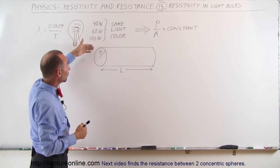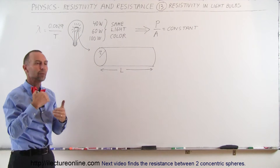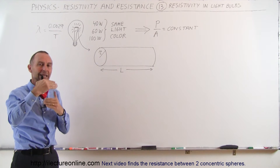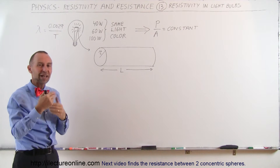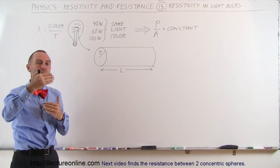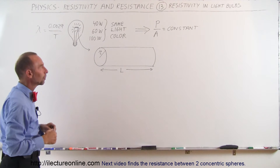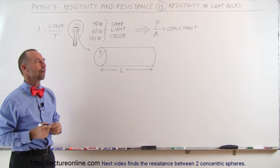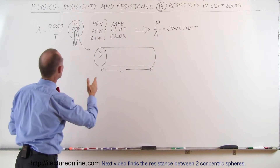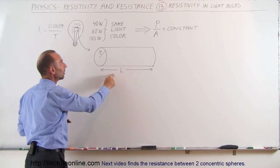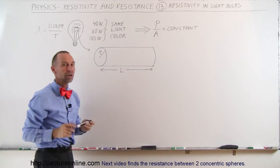Also, if we have different power ratings on the light bulb, there should be a relationship between the power ratings from one light bulb to another and the relative size of the radius of the wire inside one light bulb compared to another. So let's see if we can figure that out. First, we want to find the relationship between the radius and the length so that the power divided by the area remains a constant.